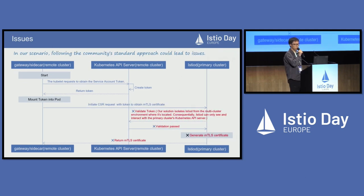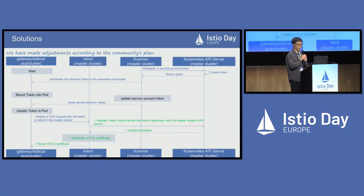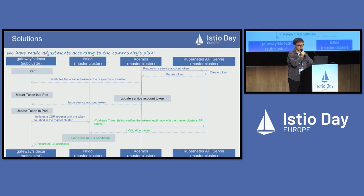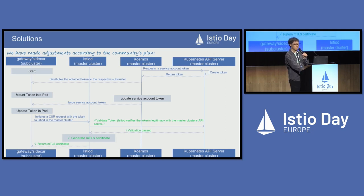In our scenario, following the community standard approach could lead to issues, as our solution isolates Istiod from the multi-cluster environment — Istiod can only see and interact with the primary cluster's API server. We have made adjustments accordingly. When a data plane container starts up, Cosmos requests a service account token from the master cluster's API server and distributes the obtained token to the respective sub-cluster. When a data plane in a sub-cluster initiates a CSR request with a token to Istiod in the master cluster, Istiod verifies the token's legitimacy with the master cluster API server. After successful validation, it generates an mTLS certificate and returns it to the data plane container, completing the CSR request.